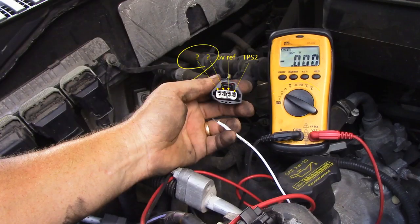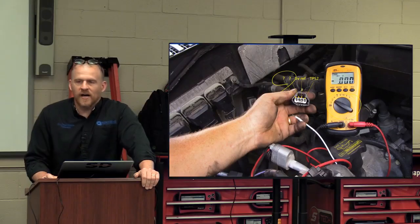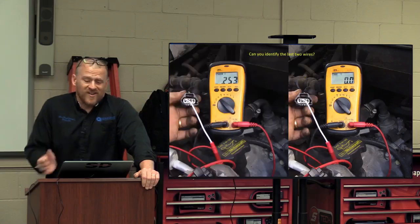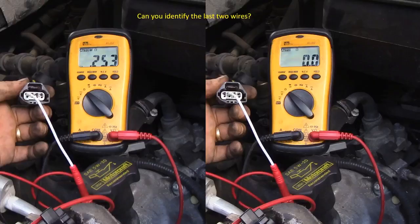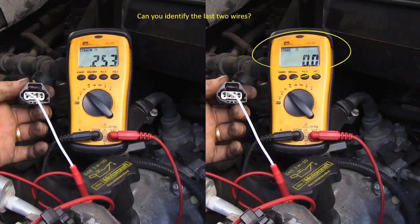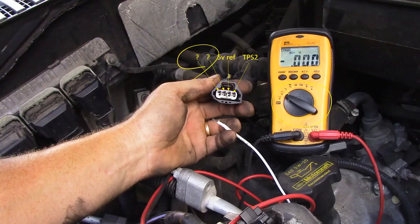Going to ohms. I already know one of those two has got to be my sensor ground, the other one's got to be my signal circuit. Am I going to hurt anything with my ohm meter? No, I'm not going to hurt anything. The one to the right reads zero ohms. My meter is connected to ground already to do voltage measurements. I'm on voltage. My meter is connected to ground.